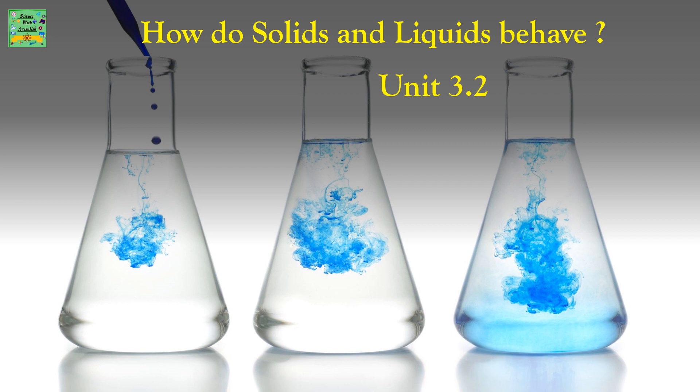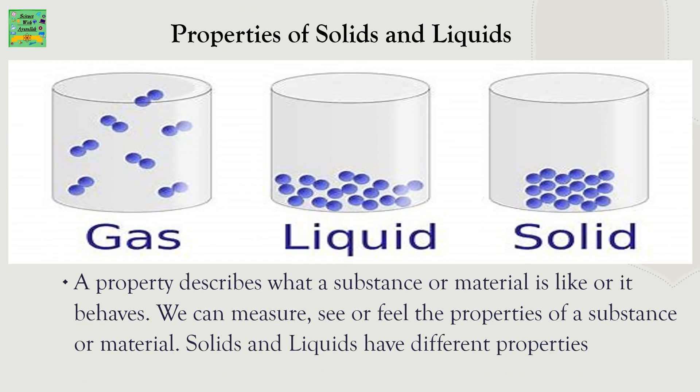How do solids and liquids behave? A property describes what a substance or material is like or how it behaves. We can measure, see, or feel the properties of a substance or material. Solids and liquids have different properties.